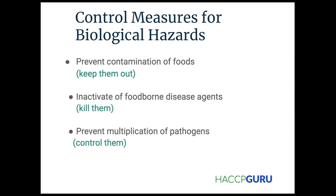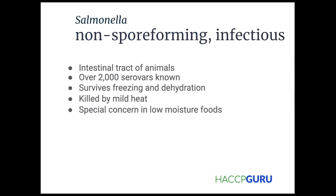Common control measures for biological hazards to prevent the contamination of foods: keep them out of where they are, and if they get there we need to make sure that we're killing them. Moving from there, you just kind of prevent the multiplication by taking them out of their growth zone.